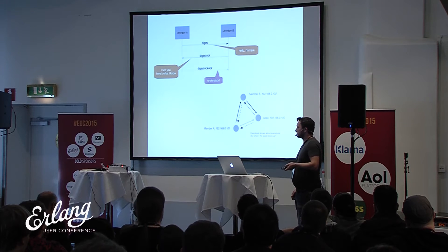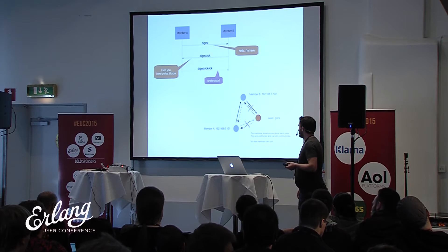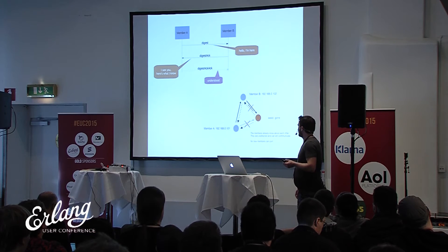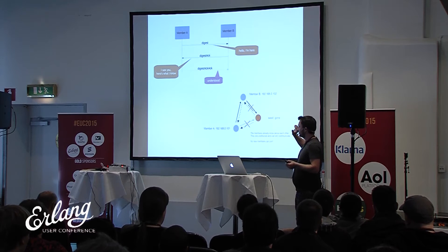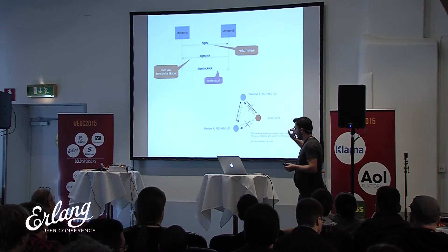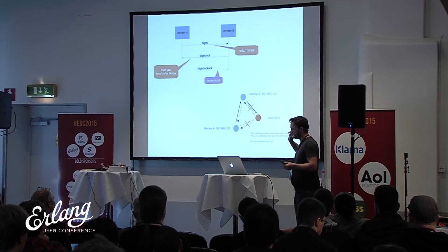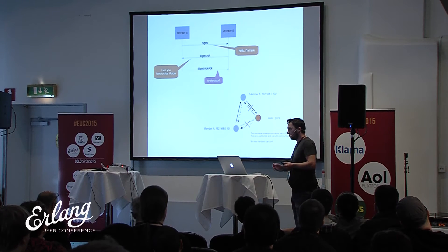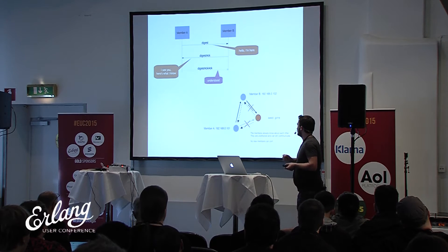What if something goes wrong — a net split or a member disappears? The nature of the gossip system is such that if something disappears, it's not really a big problem. Because the membership list that the members hold means they are already aware of who the other members in the overlay are. If one member goes away it doesn't impact the system as such — no new members can join when the seed goes away, but the others can still talk to each other. The membership is just a list of names, addresses, or paths to reach other members in the overlay.